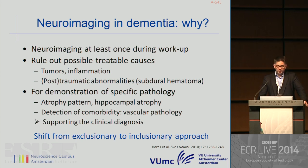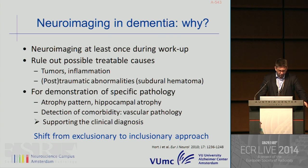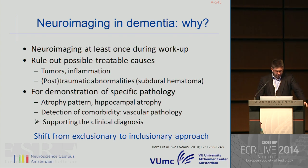—approximately three to six percent. In the majority of patients, we are looking for specific pathology, and particularly for certain atrophy patterns, vascular pathology, and comorbidity to support the clinical diagnosis of dementia. Therefore, we are dealing with a shift from the exclusionary approach to the inclusionary approach.